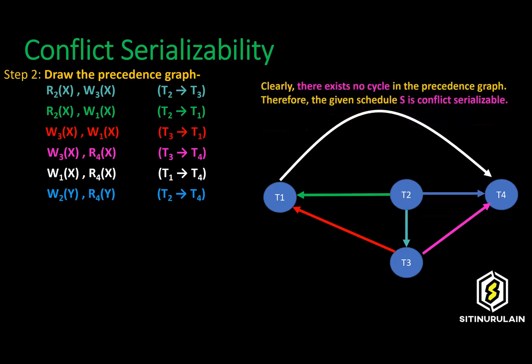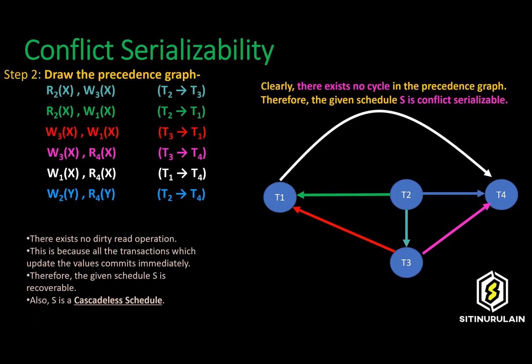In the precedence graph, it is clearly shown that there exists no cycle. Therefore, the given Schedule S is conflict serializable. There exists no dirty read operation, because all the transactions which update the values commit immediately. Therefore, the given Schedule S is recoverable. Also, S is a cascadeless schedule.